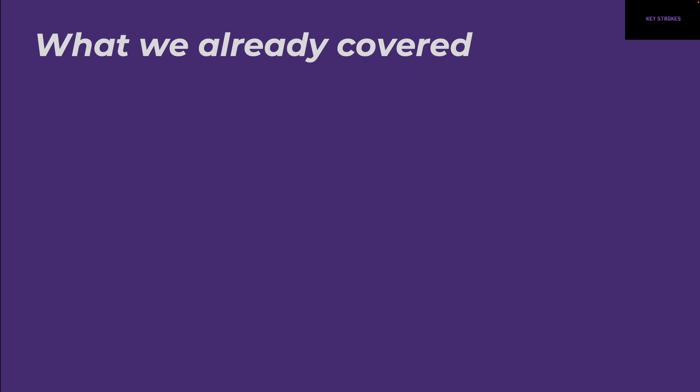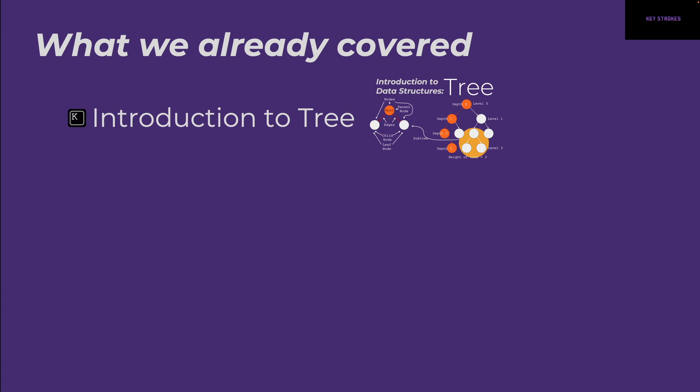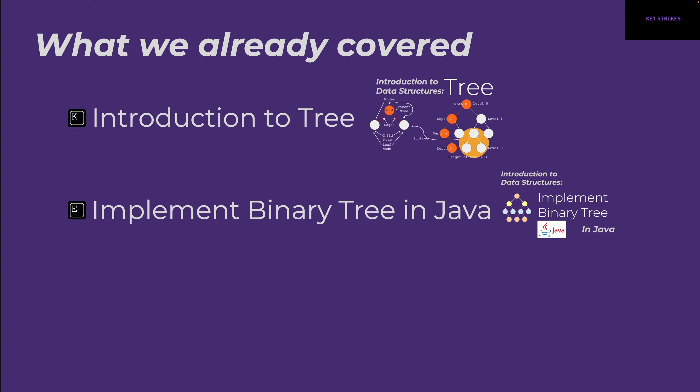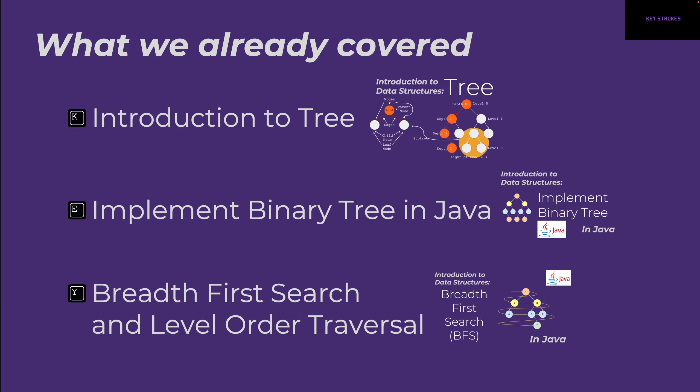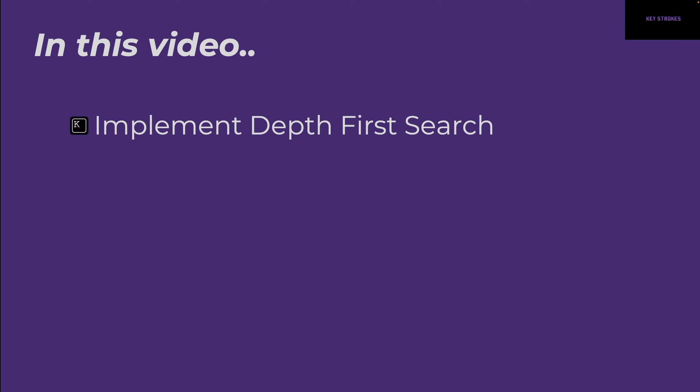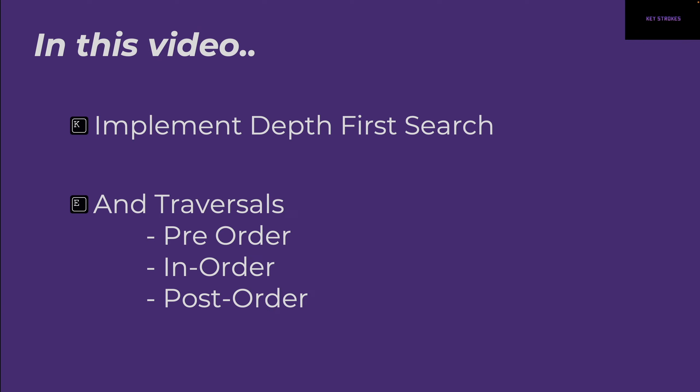Let's see everything we've already covered in the previous videos. We started with an introduction to trees and talked about various basic concepts. Then we implemented a binary tree in Java, and used that implementation to implement breadth-first search and level-order traversal. Please check out those videos to build some basic understanding about trees if you need to. In this video, after breadth-first search, it's time for depth-first search, and then we'll extend it to implement different traversals — all using the basic binary tree implementation created in Java.